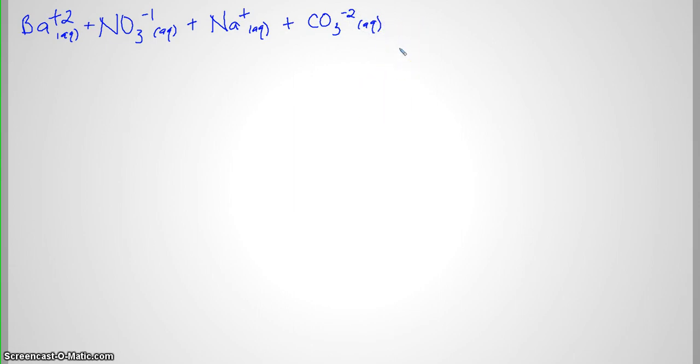Now we know our reactants. We want to figure out our products. So our barium and our sodium are going to replace each other. So the barium will bond with the carbonate. One of our products will be barium carbonate, and we'll figure out what it is. And then the sodium will bond with the nitrate.